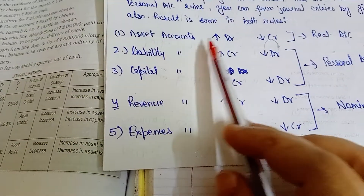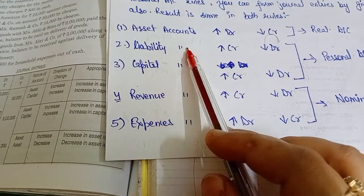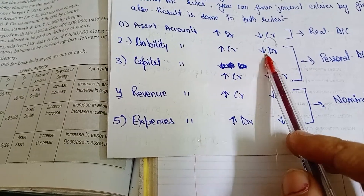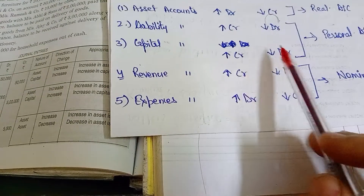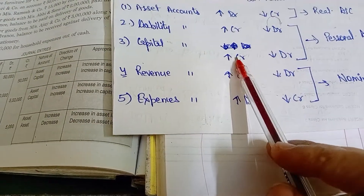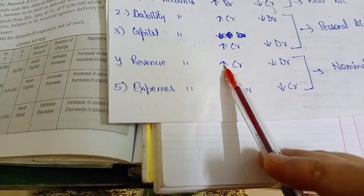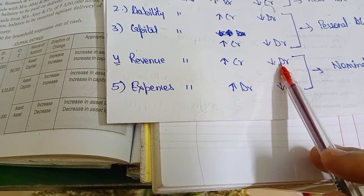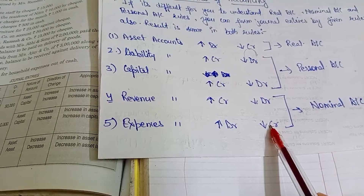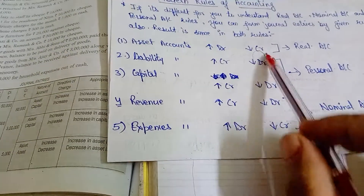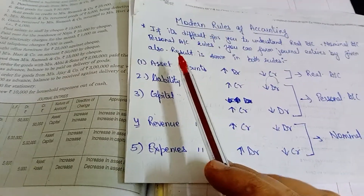According to modern rules of accounting: assets when increased are debited and when decreased are credited. Liabilities when increased are credited and when decreased are debited. Capital when increased is credited and when decreased is debited. Revenue when increased is credited and when decreased is debited. Expenses when increased are debited and when decreased are credited.